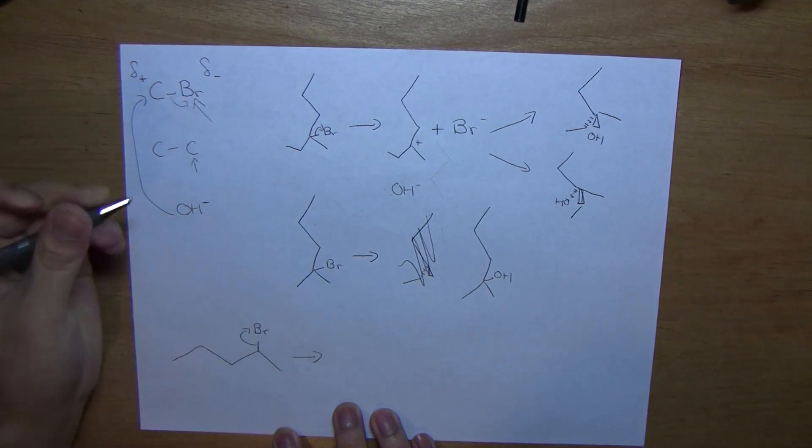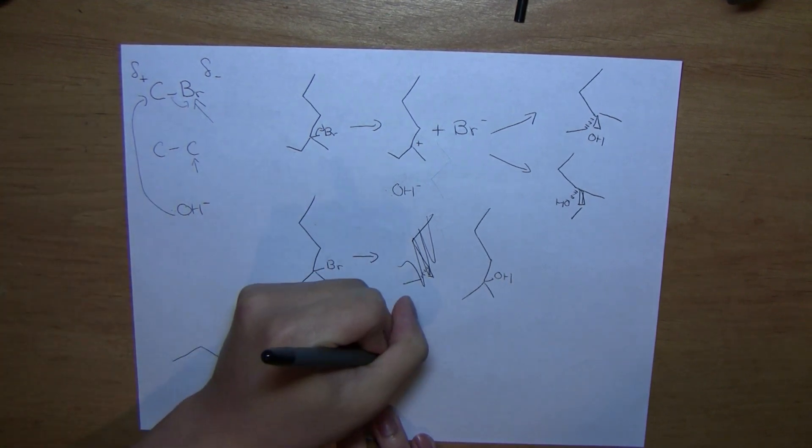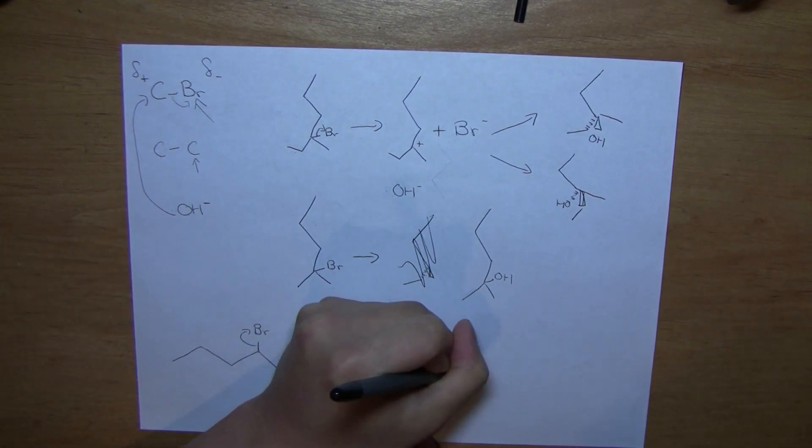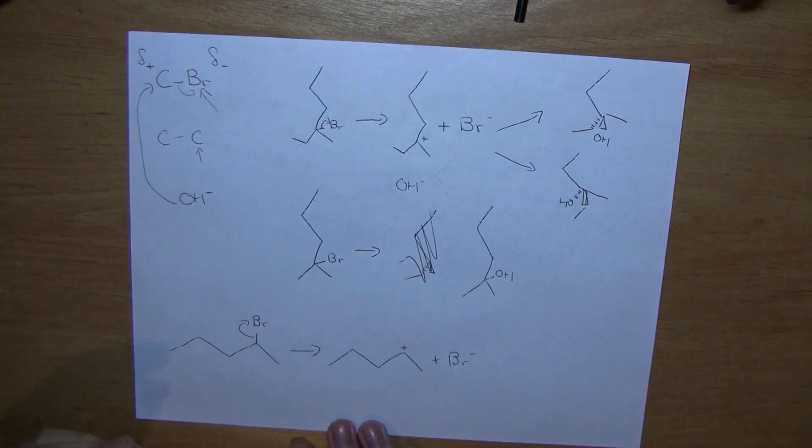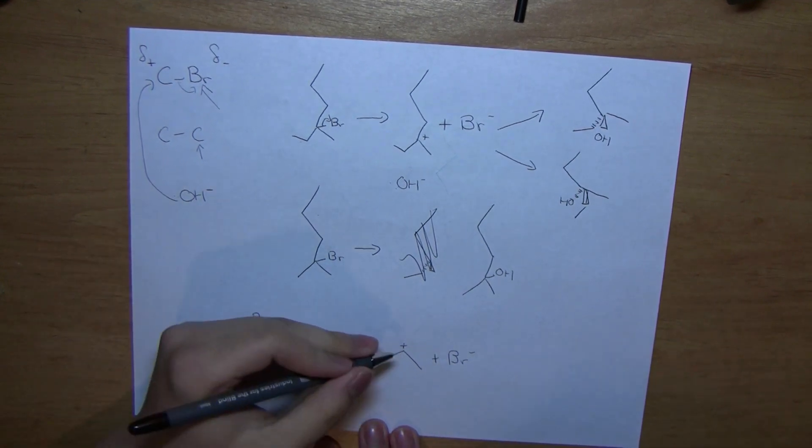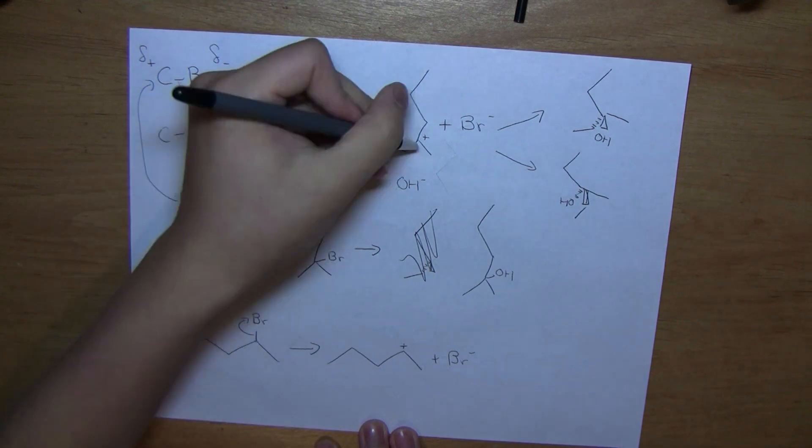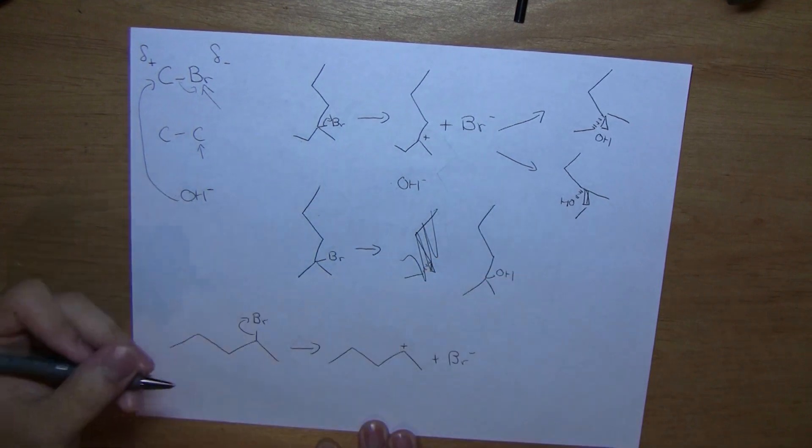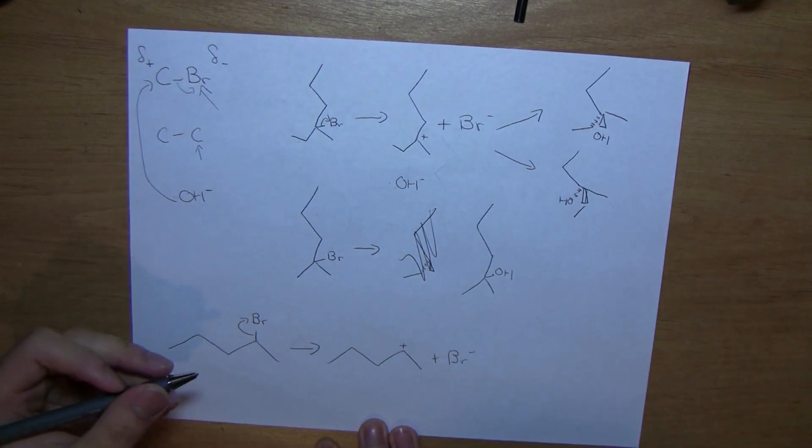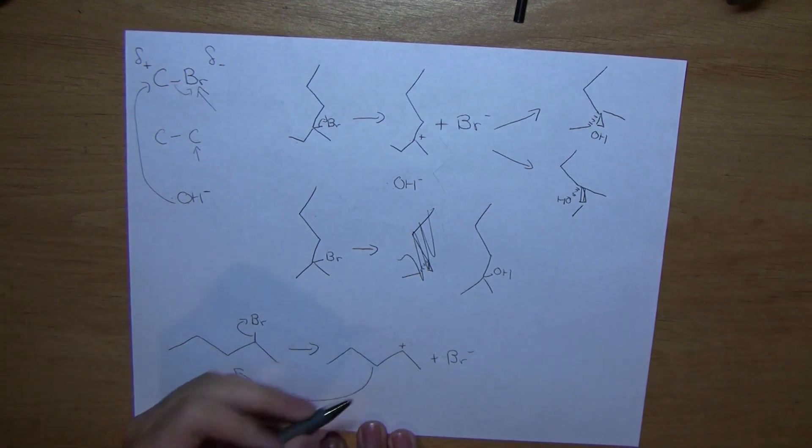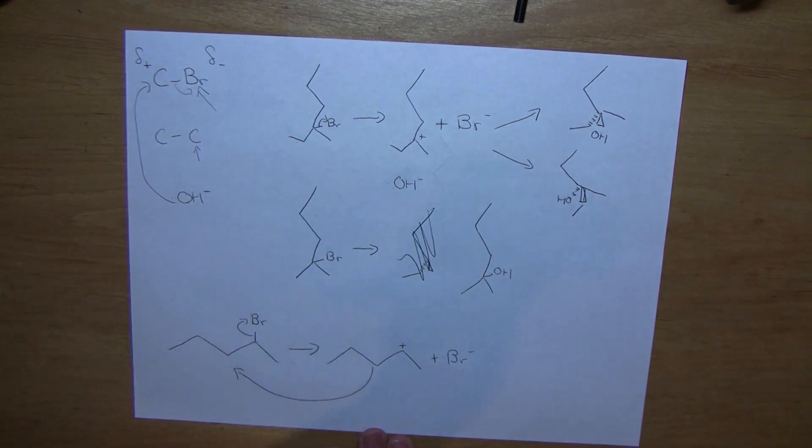Now, what's the problem with this? Well, we know from before that a secondary cation is much more unstable than a tertiary cation is. Therefore, instead of going on to form more products, it would much more prefer to go back to its reacted form. Therefore, since the intermediate is so shortly lived, it forms barely no product.